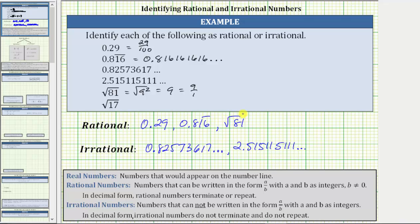And then finally, we have the square root of 17. 17 is not a perfect square. This will not simplify perfectly, and therefore as a decimal it will not terminate and not repeat. The square root of 17 is irrational.